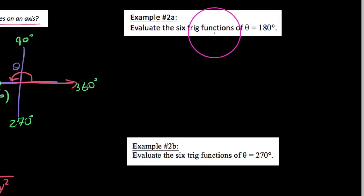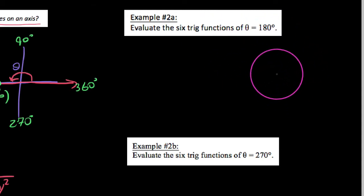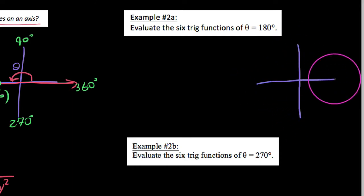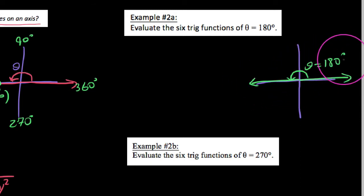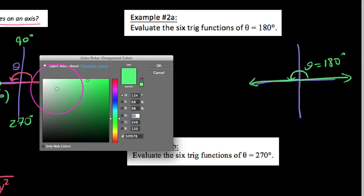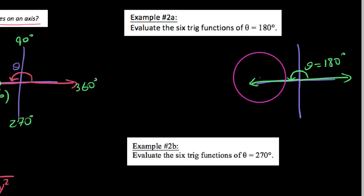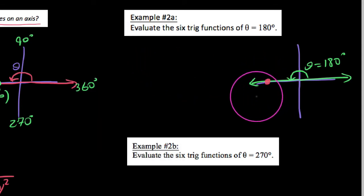Example 2A: find the six trig functions of the angle theta, which happens to be 180 degrees. We're going to start by sketching a picture of our angle. A 180 degree angle, or pi radians, would be right here. Theta is not a mystery to us this time — we know it's 180 degrees. What we need to do now is find a point on the terminal side. I'm going to use the point negative one, zero.